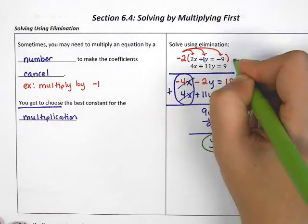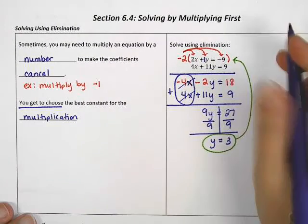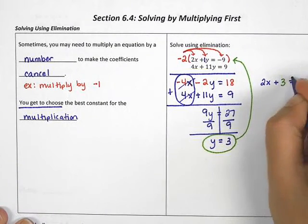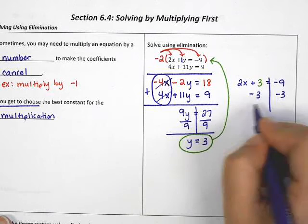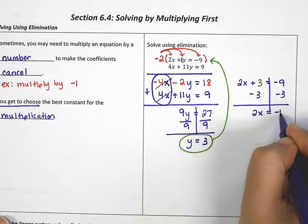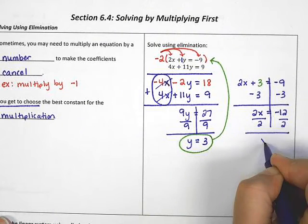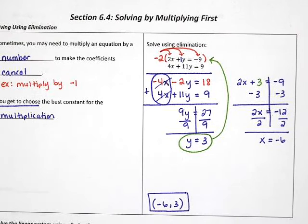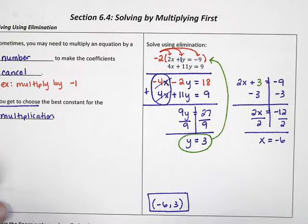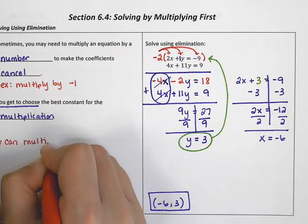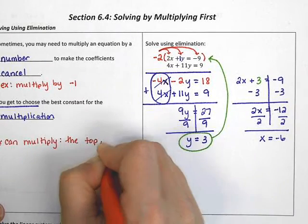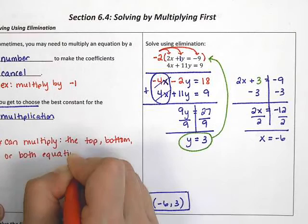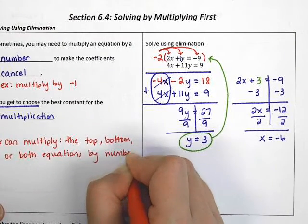If I take the 3 and plug it back into the original problem, I get 2x plus 3 equals negative 9. I subtract 3 on both sides to get 2x equals negative 12. Then I divide by 2, so x equals negative 6, which means my answer is negative 6, 3. Now, you can multiply the top, bottom, or both equations by numbers if necessary.